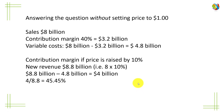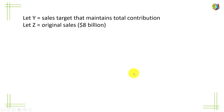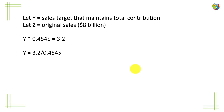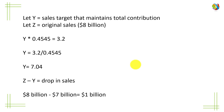Now let's look at the sales drop. Let Y equal the sales target that maintains total contribution, and Z be the original sales of $8 billion. Y times 0.4545 equals 3.2, therefore Y equals 3.2 over 0.4545, giving us 7.04, which we round down to 7. Z minus Y is the drop in sales: 8 minus 7 equals 1. You can use either method — I prefer the second, but whichever you prefer, go ahead.